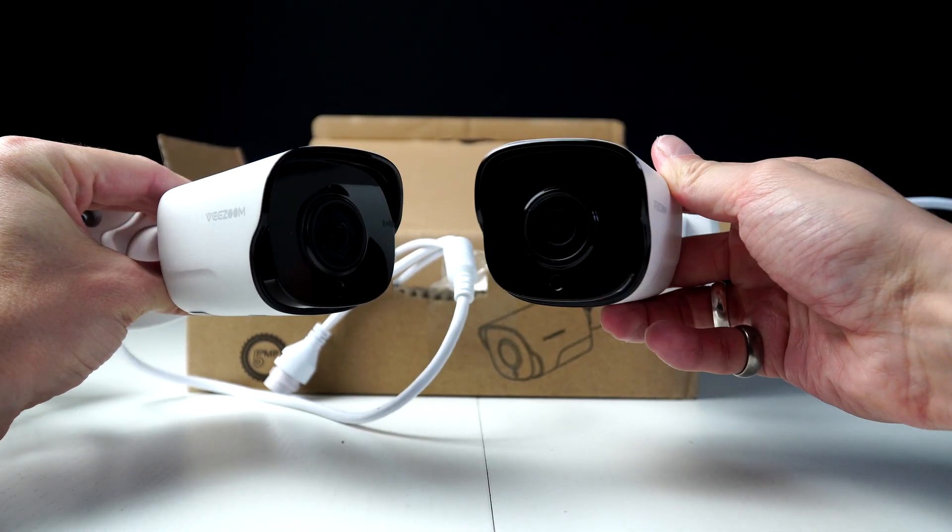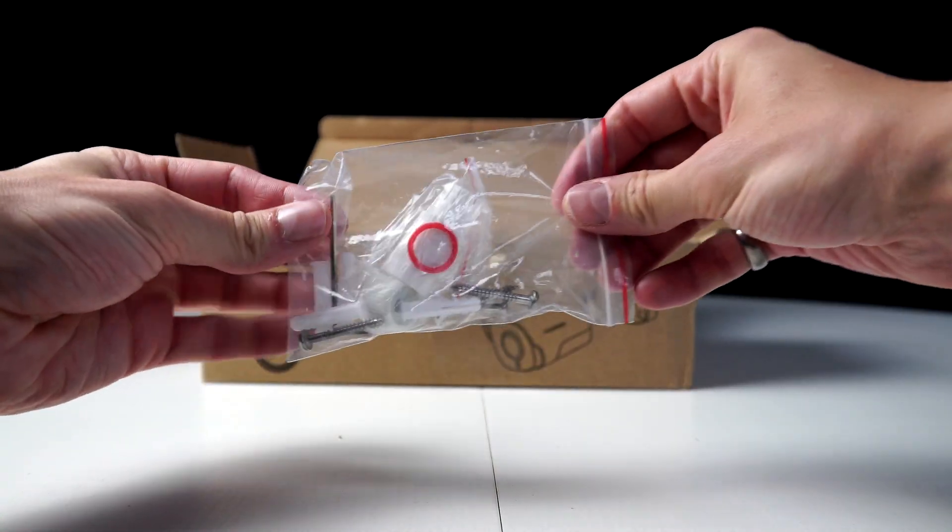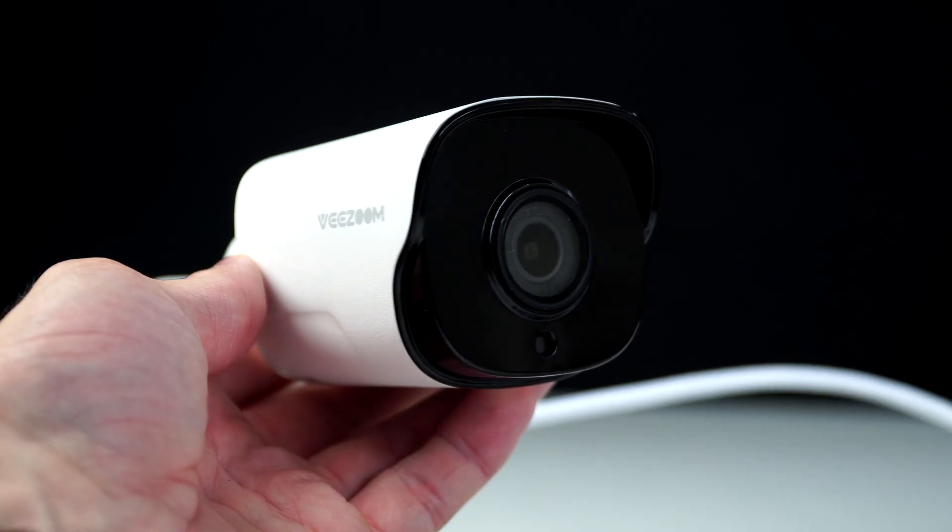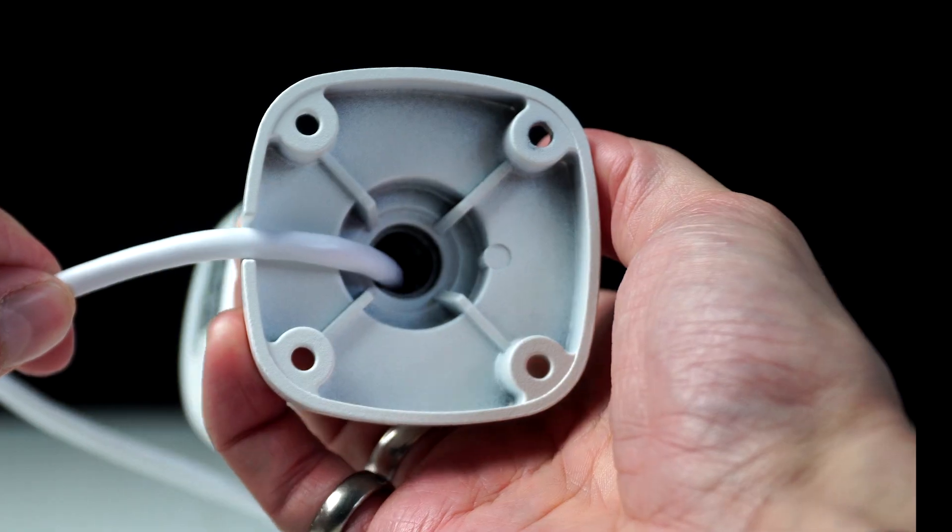So in this two-camera set, we have the two cameras, two 18-meter Ethernet cables, two wall plugs and screws with the join covers, and instructions.